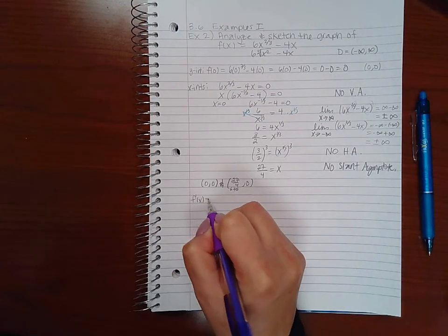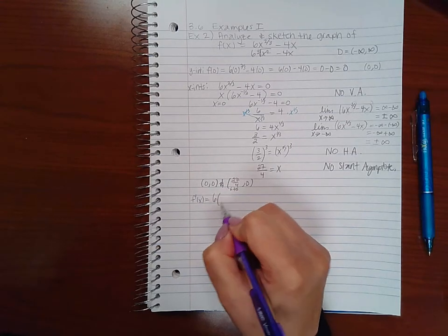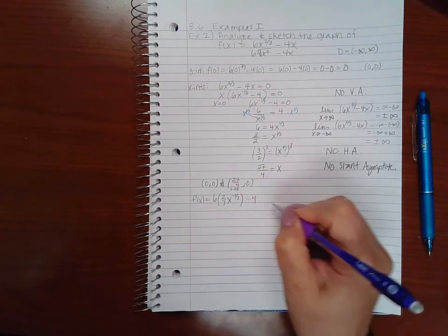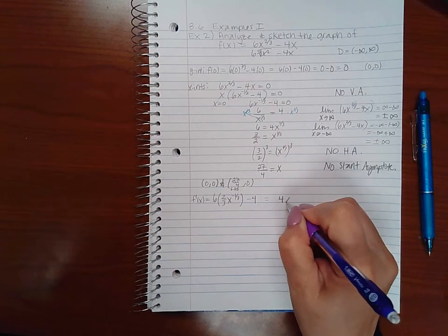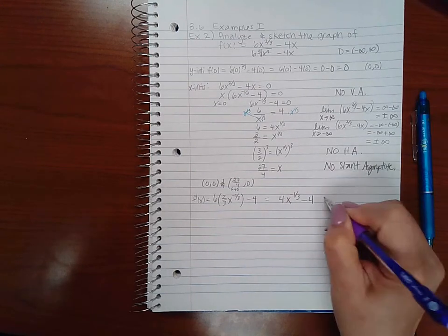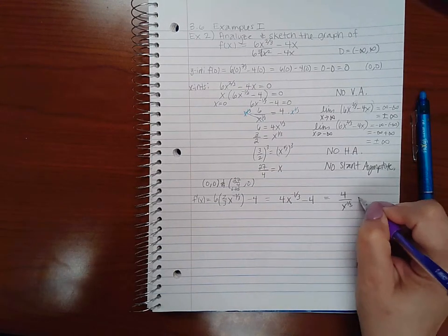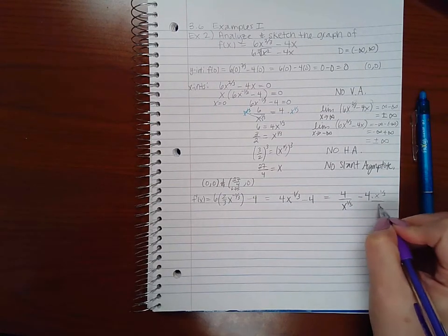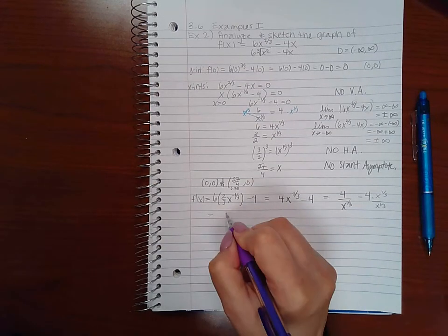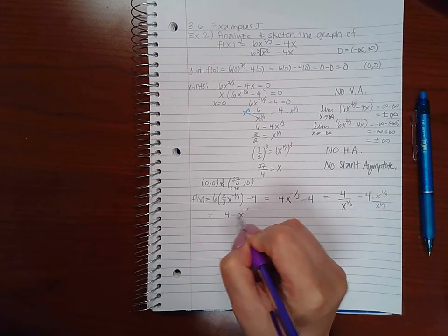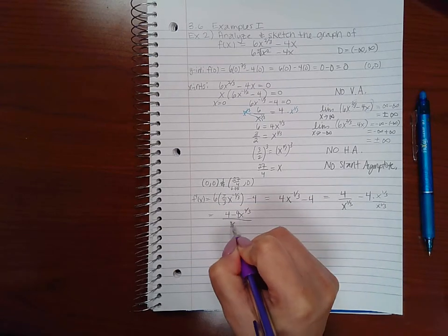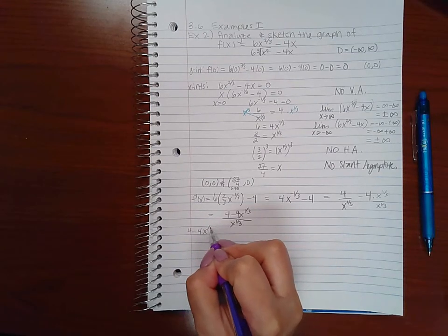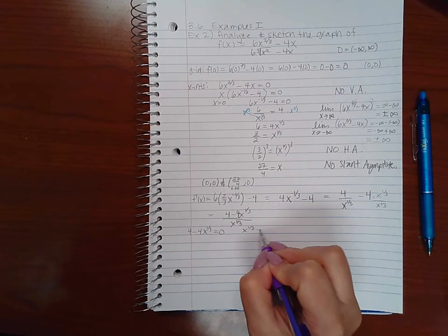So we can move on and start taking the derivatives. So the first derivative is going to be 6 times 2/3 x to the negative 1/3 minus 4, which is 4x to the negative 1/3 minus 4, or 4 over x to the 1/3 minus 4. And if I want to make this one big fat fraction, I would have 4 minus 4x to the 1/3 over x to the 1/3. So I've got to set my numerator equal to 0